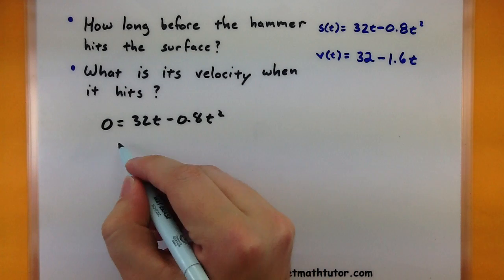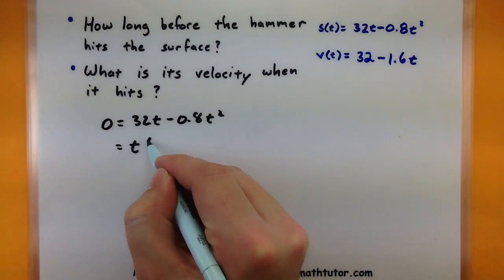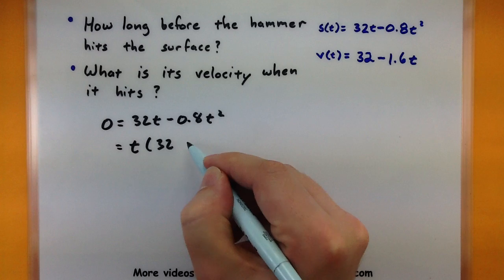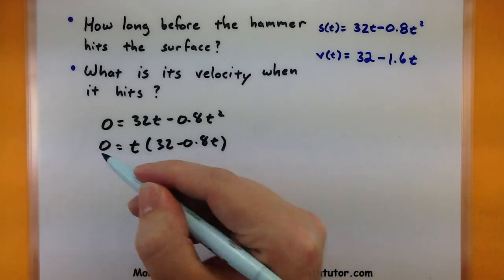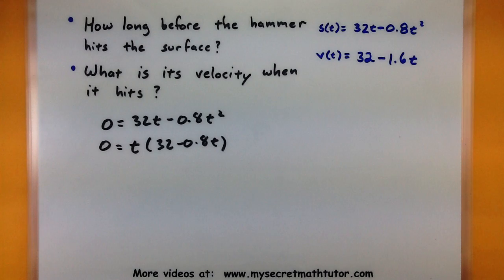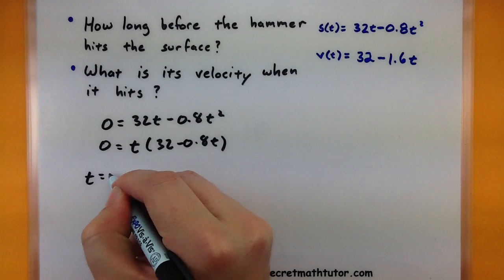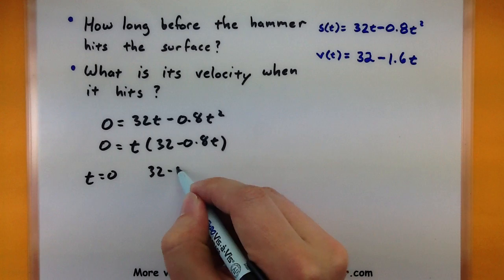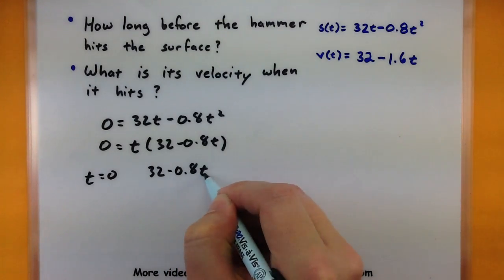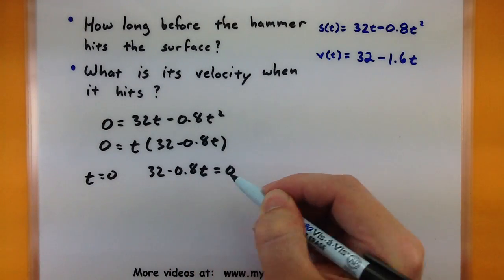Notice how there's a t in both these spots. We can factor that out. So solving this, I'd end up with two spots where it could equal 0, when t equals 0, or when all of this equals 0. So 32 minus 0.8t, that could equal 0.